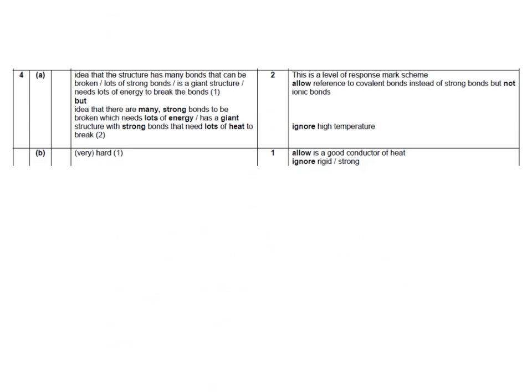Here's the answer. One mark for the idea that the structure has very many bonds that need to be broken, and one mark for the idea that these bonds are very strong. Secondly, silicon carbide would be very hard, allowing it to be used as a cutting tool. You could also say it is a good conductor of heat. Don't get mixed up between hard and strong - hard means it will scratch other things, whereas strong means it can take a lot of weight before it breaks.